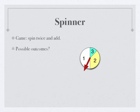Is it possible to make a three? Yeah, one and two. Is it possible to make a four? Sure. What about a five? Yeah, that's possible too, three plus two. So two, three, four, five, and six are our possible outcomes.